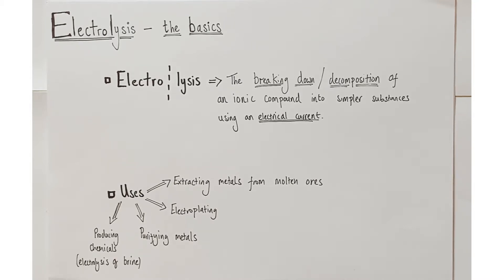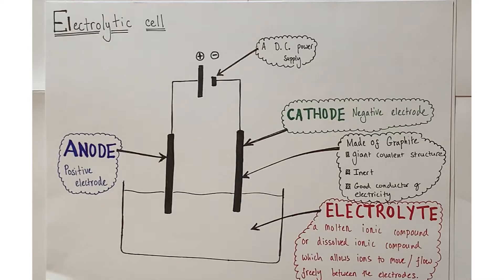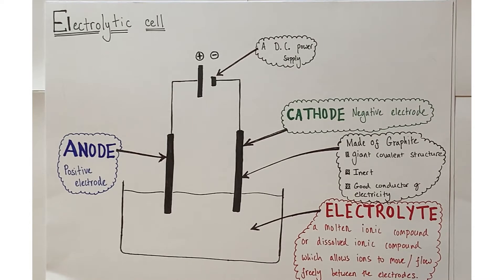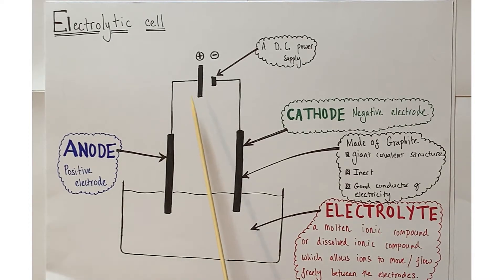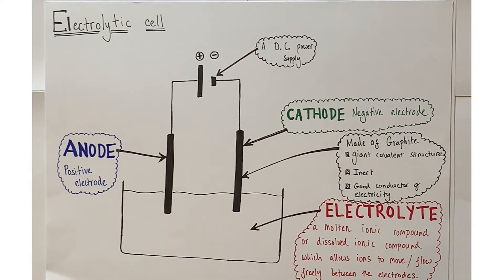Hydrogen, chlorine, and sodium hydroxide can be used in the manufacture of multiple things, including bleaching paper and bleach itself. A basic electrolytic cell has a DC (direct current) power supply, which produces a current flowing in one direction only, giving us predictable positive and negative terminals. We connect our DC power supply to graphite electrodes.